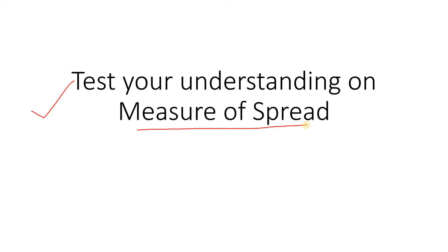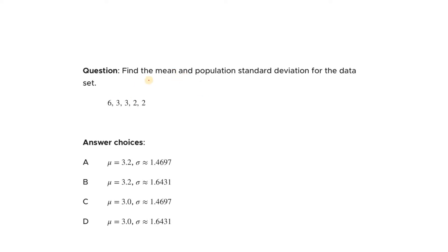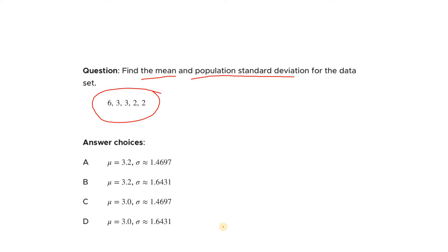Let's start with our first question. The question is: find the mean and population standard deviation for this data set — 6, 3, 3, 2, 2. There are 4 options. Pause the video, try to calculate the correct answer, and then check whether you have predicted correctly. Here I am explaining.